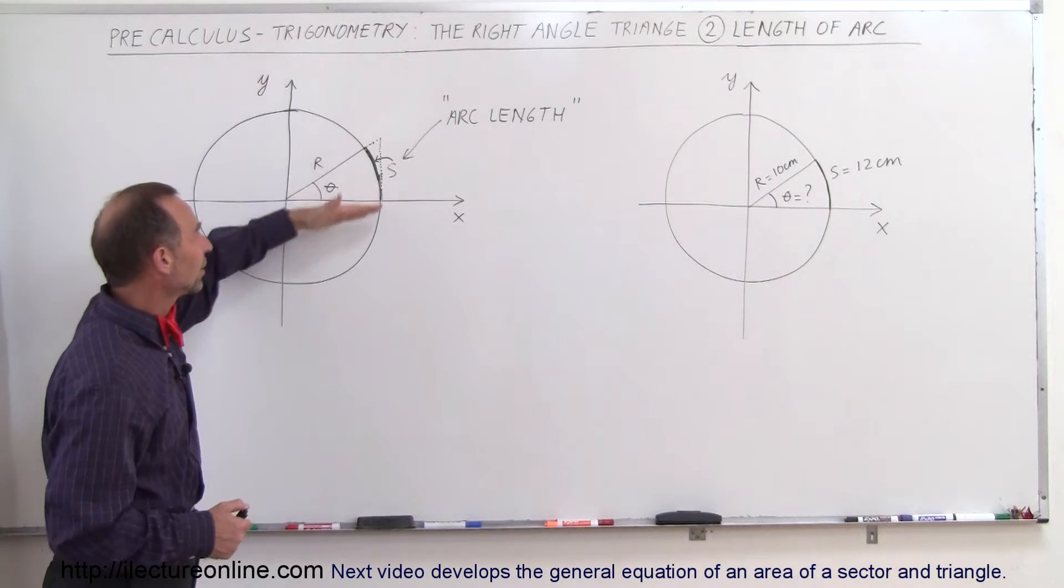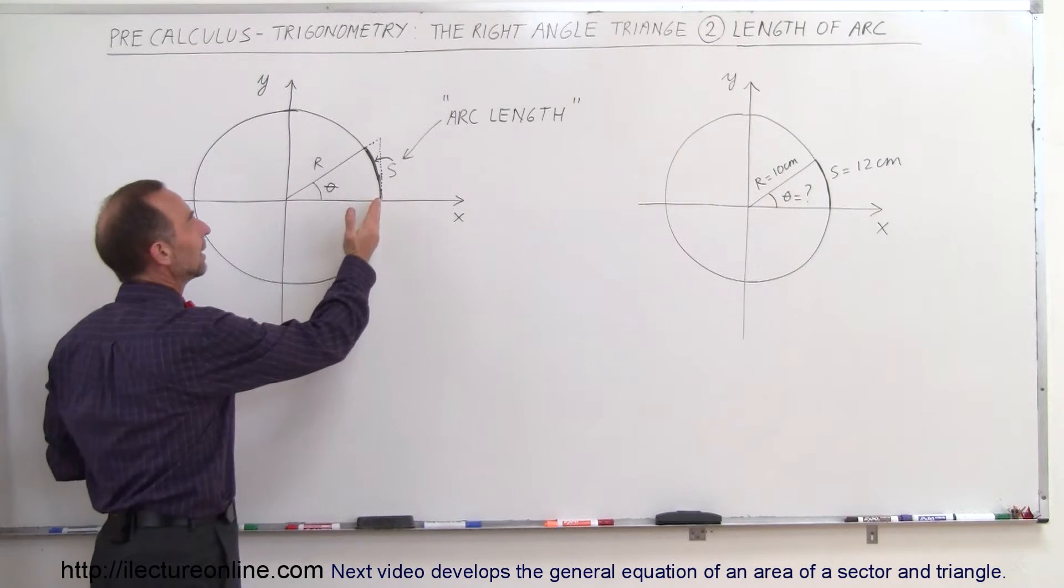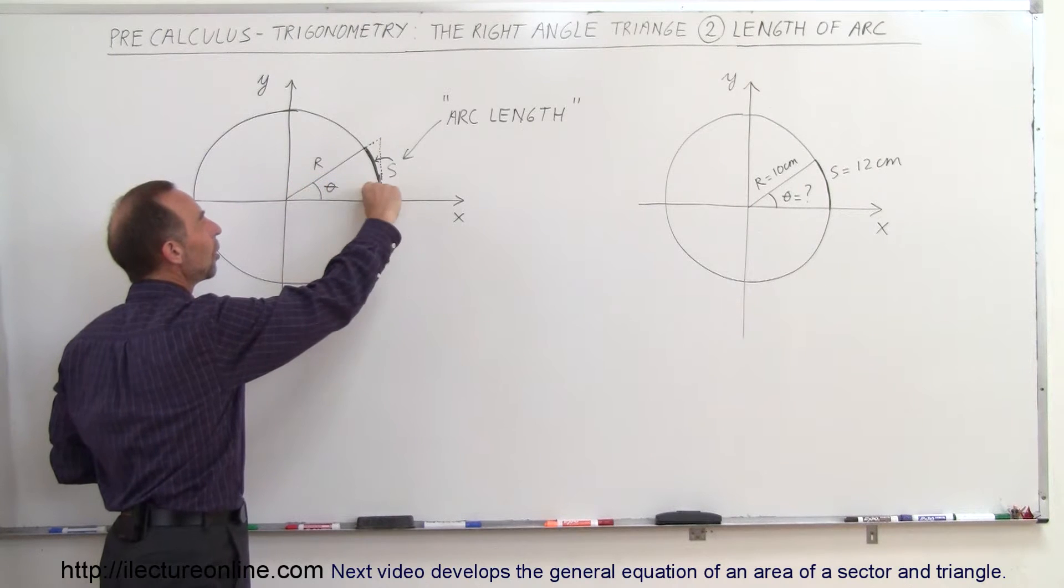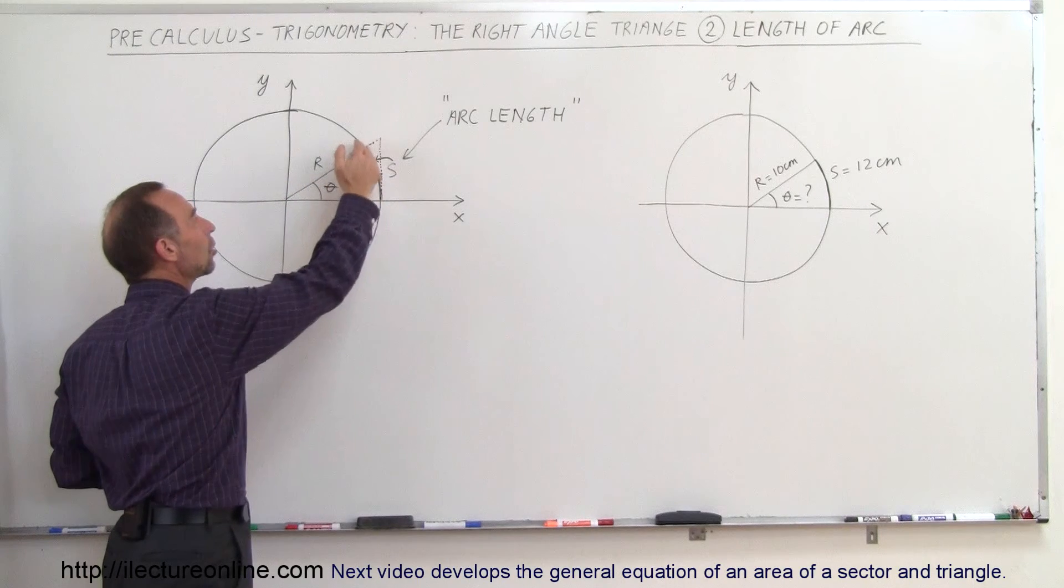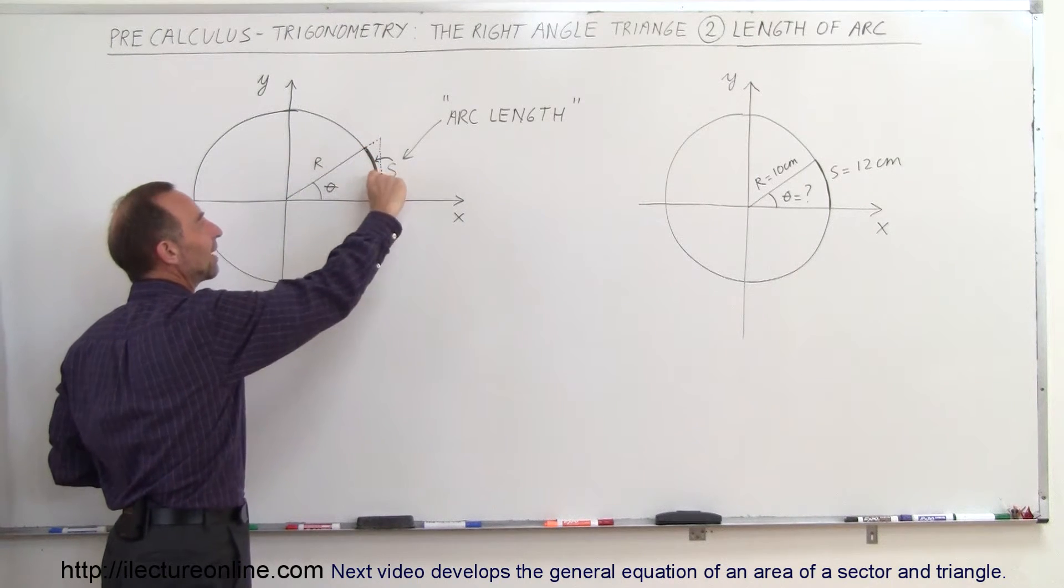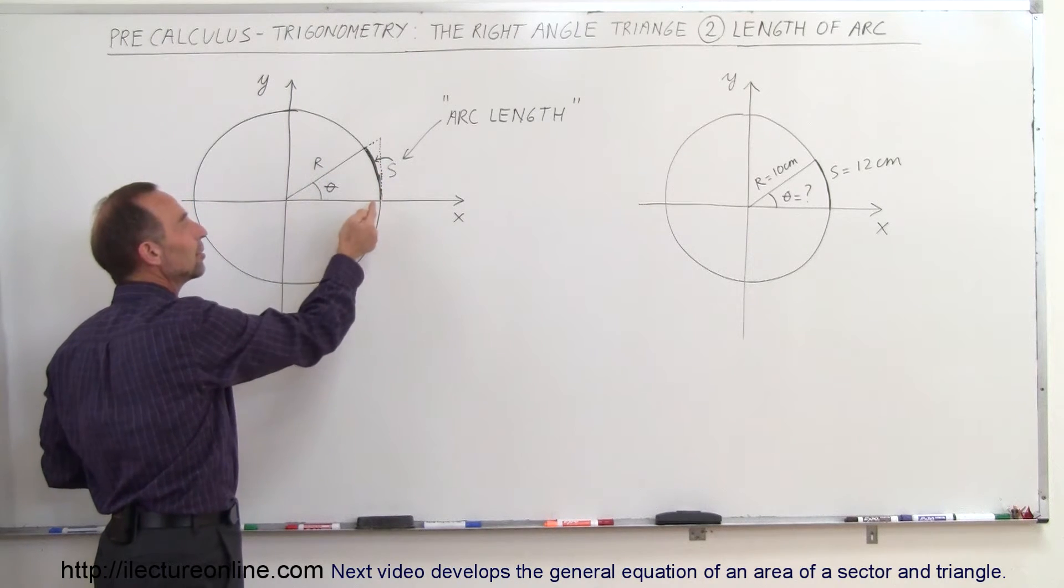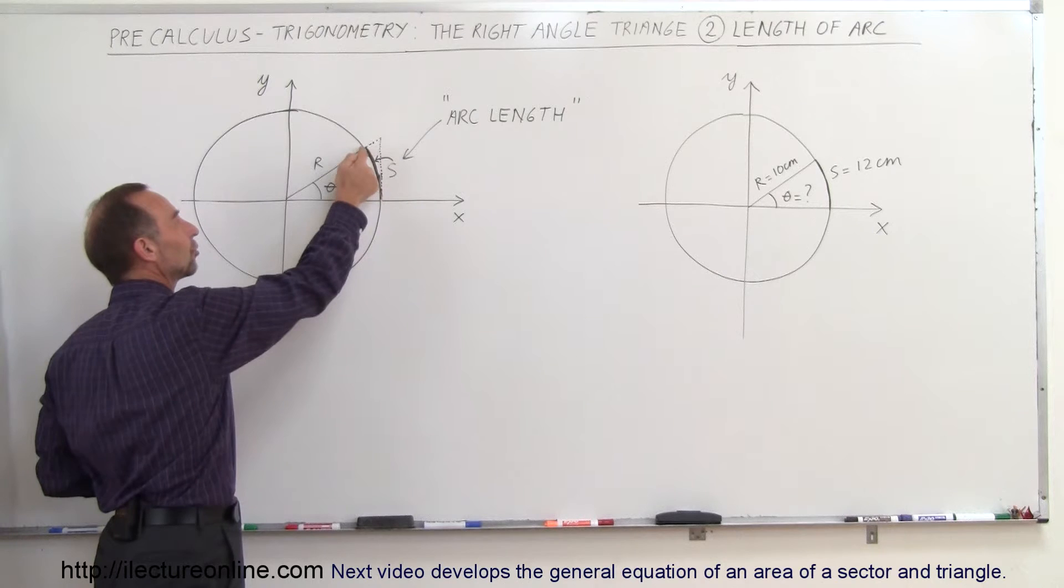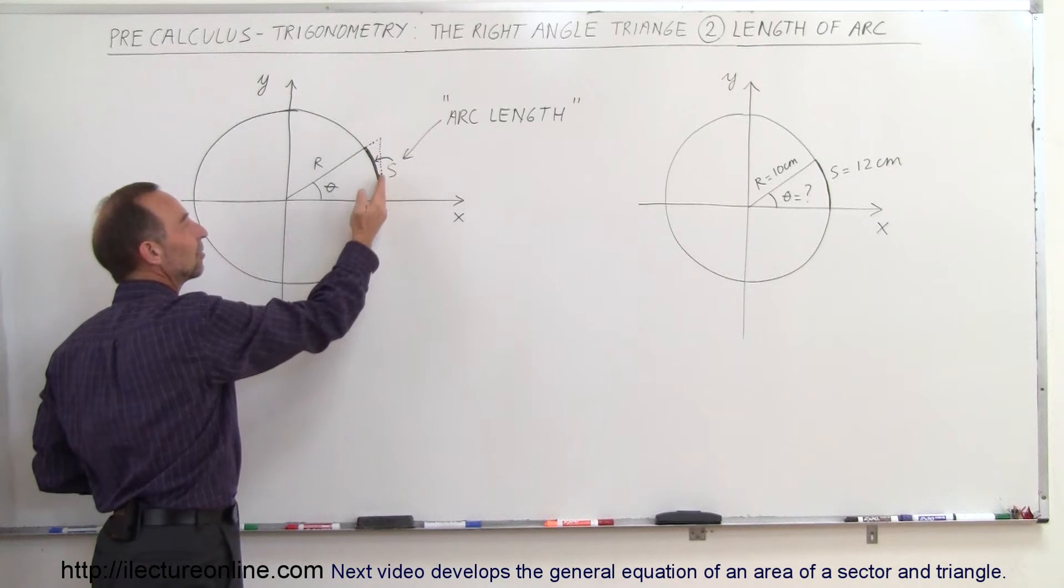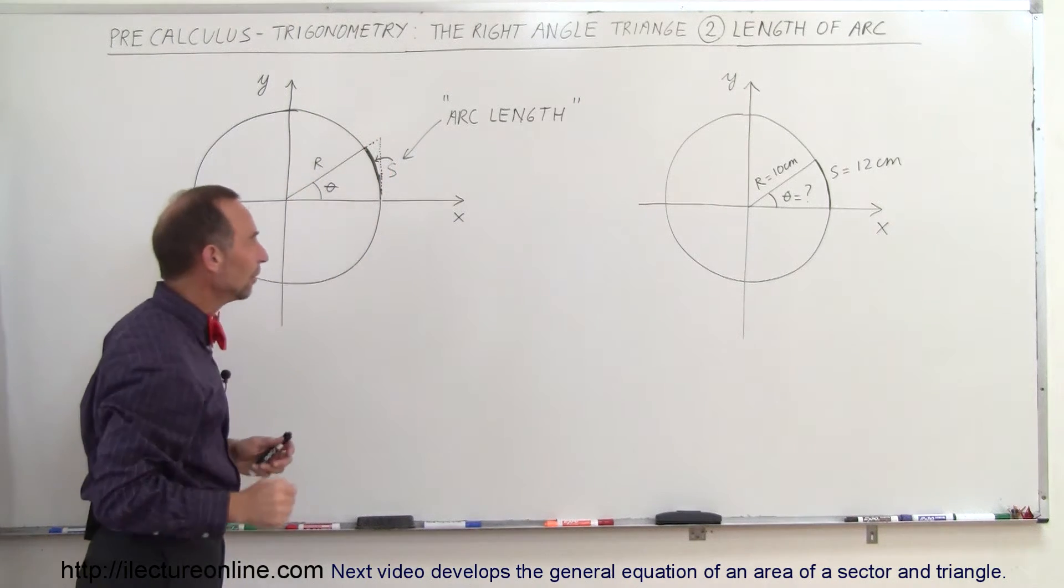Here's the angle of the triangle, and notice that if the angle is very small, the distance along the circle is about the same as the distance of the opposite side to the angle. But as the angle gets bigger, you can see that this distance along the circle will be different than the distance of the triangle that's made by this angle.